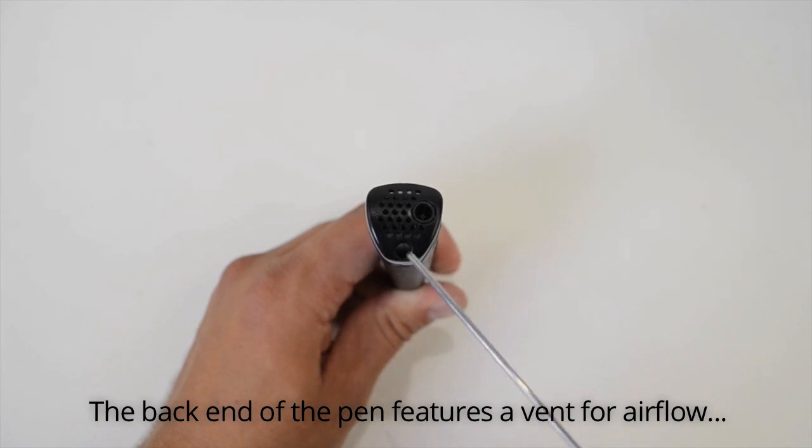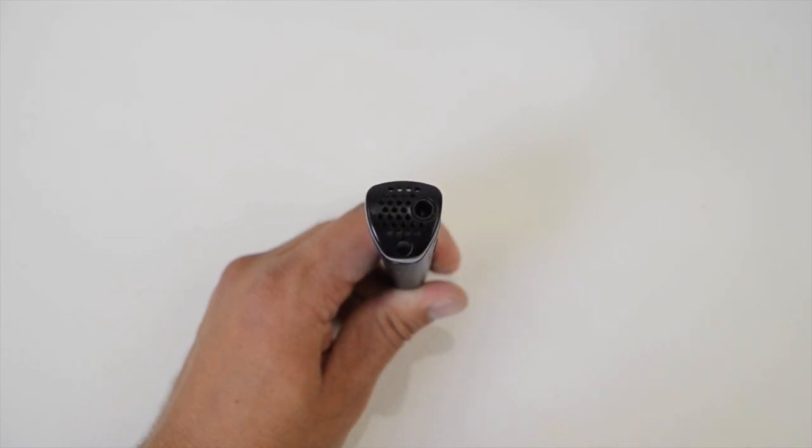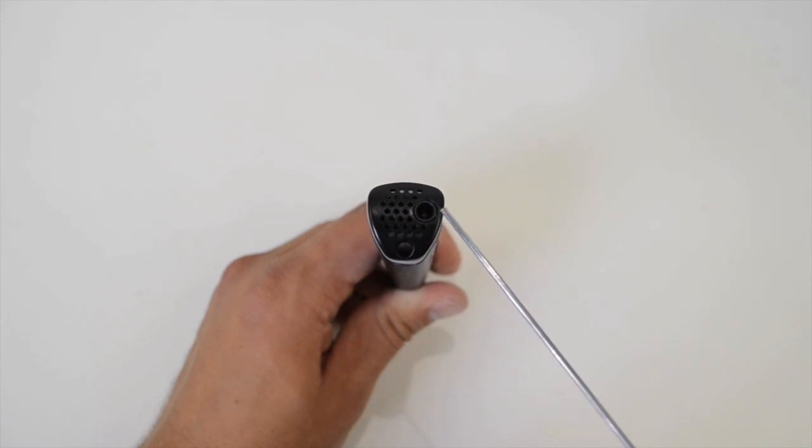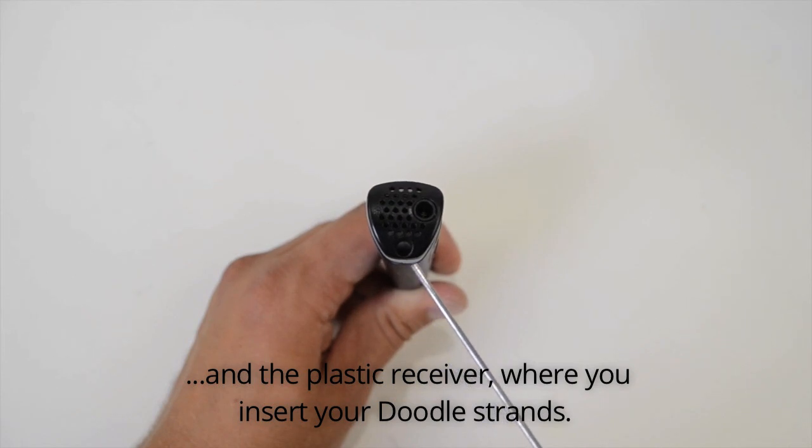The back end of the pen features a vent for airflow, the power port where you plug your three Doodler in, and the plastic receiver where you insert your doodle strands.